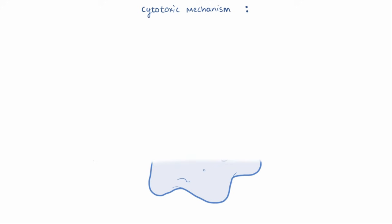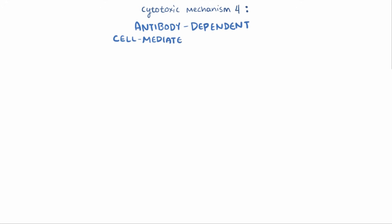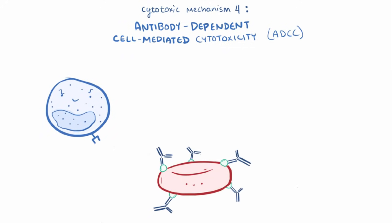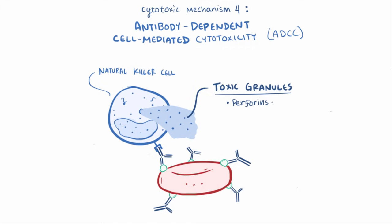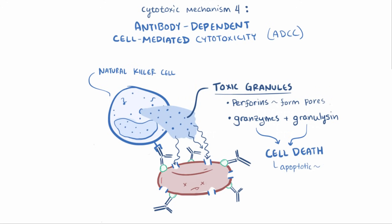The fourth mechanism is called antibody-dependent cell-mediated cytotoxicity, or ADCC. In this case, the bound antigen-antibody complex gets recognized by natural killer cells, which recognize the Fc tail of the antibody and release toxic granules. These granules contain perforins that, just like the MAC, form pores in the cell. The pores also allow entry of enzymes called granzymes — silent assassins — as well as granulicin, which together cause cell death in an apoptotic or quiet way, such that there's no surrounding inflammation.